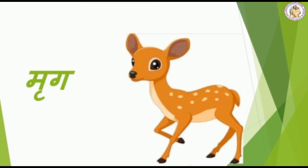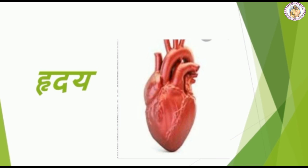Next word is mrig. Ma plus re-matra mri. Mrigak. Mrigak means deer. Next word is hridaya. Ha plus re-matra hri. Hridaya. Hridaya means heart.